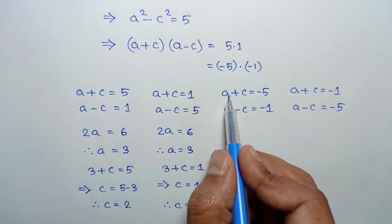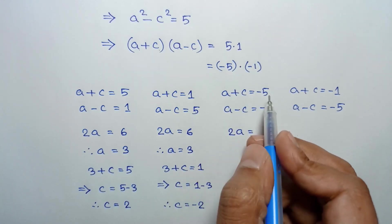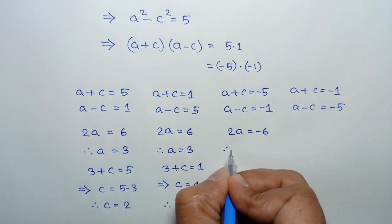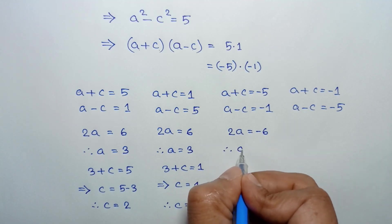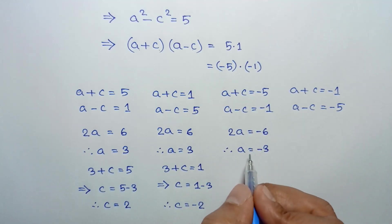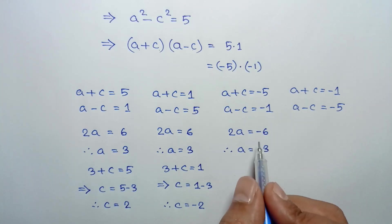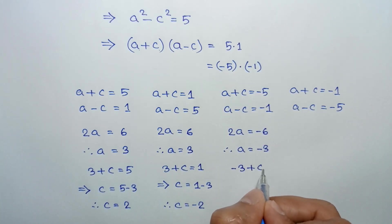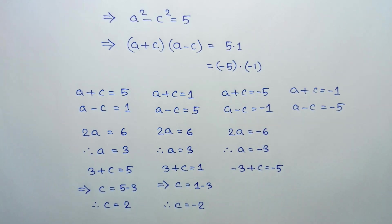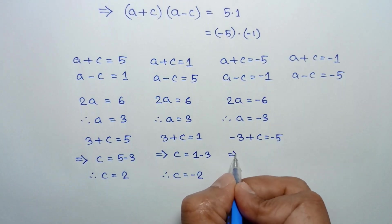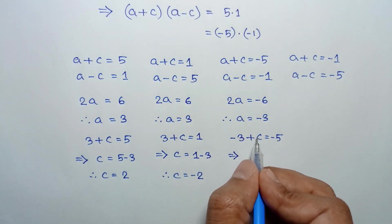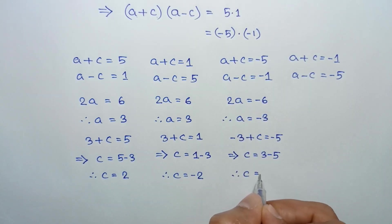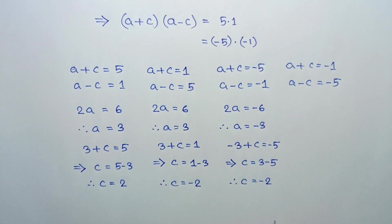Adding the third pair of equations, c cancels out. We get 2a equals negative 5 plus negative 1, which is negative 6. Dividing both sides by 2 gives a equals negative 3. Substituting a equals negative 3: negative 3 plus c equals negative 5, so c equals negative 5 plus 3, giving c equals negative 2.